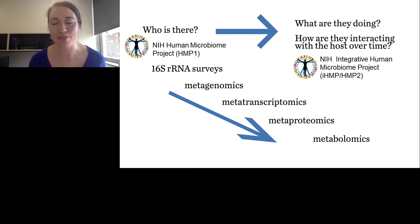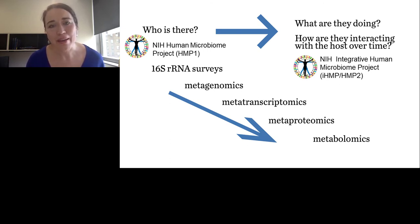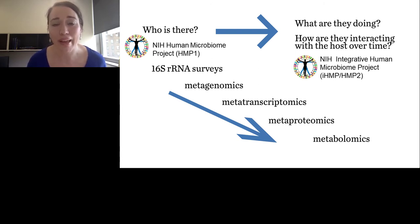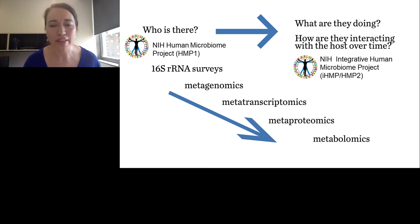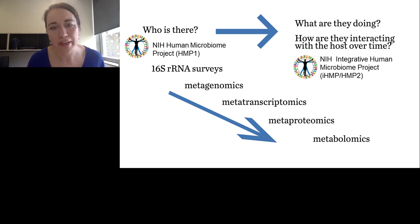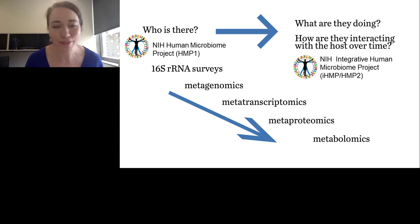That could be human proteins, bacterial proteins, viral proteins — all of these in a sample to try to understand things at that level. And further, the metabolites: what are these organisms producing, what are the host cells producing? Then integrate all of these omics together to really try to get a fuller picture of what's happening between the microbial communities and their human host.